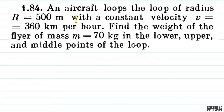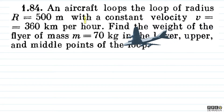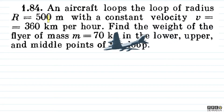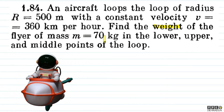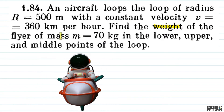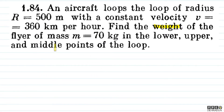The question says: an aircraft loops the loop of radius R equal to 500 meters with a constant velocity V equal to 360 kilometers per hour. Find the weight of the flyer of mass m equal to 70 kg in the lower, upper, and middle points of the loop.